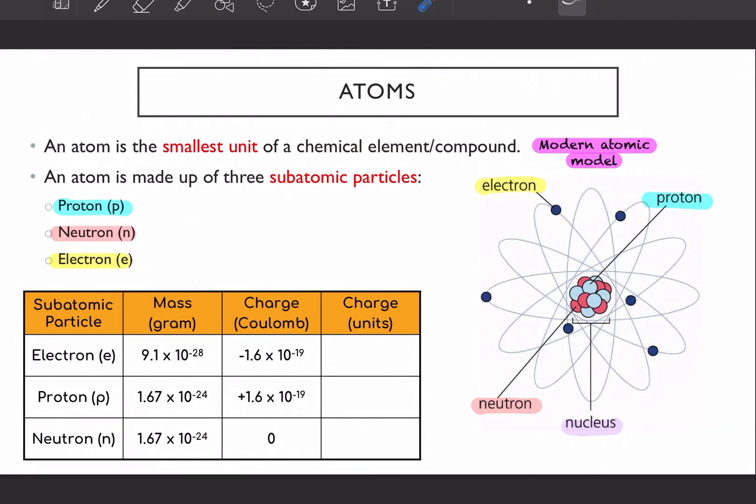So first of all, we will get to know the most basic elements of a compound. So a chemical element has atom as the smallest unit. So maksudnya dalam sesuatu element tu, atom ialah benda yang paling basic, paling kecil. So your atom, it is made up of three subatomic particles.